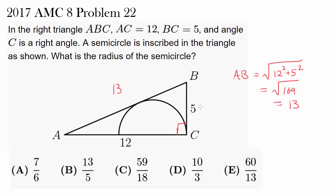Or you may have the Pythagorean triple 5, 12, 13 memorized. So when you have sides 12 and 5 with a right angle, the hypotenuse is 13.